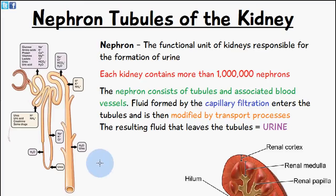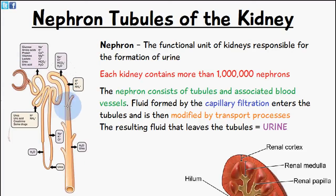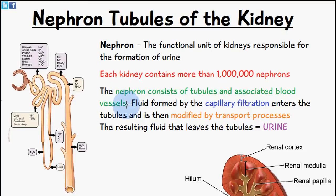I've included a diagram on the left which shows what a nephron looks like. There are arterioles which provide blood for the nephron, and eventually we have urine production. The blood which wasn't filtered gets removed via the efferent arteriole. The nephron consists of tubules and associated blood vessels.